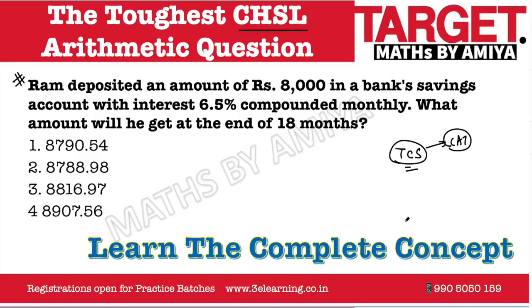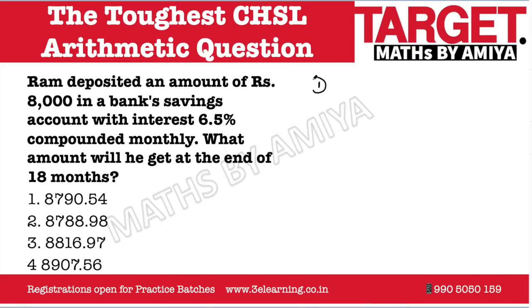Let's first look at the concept, then solve this question. This problem uses two concepts. The first concept is 1 plus r raised to power n — that is the binomial theorem.